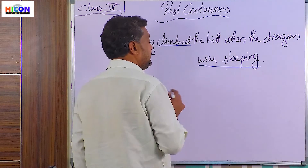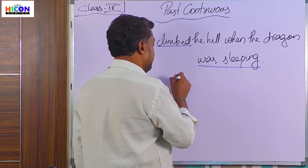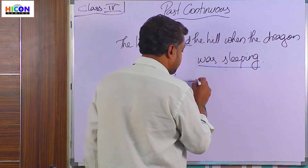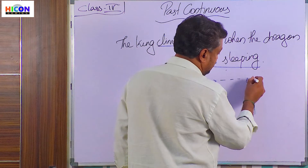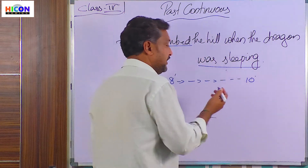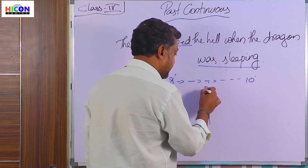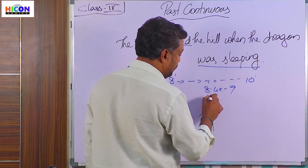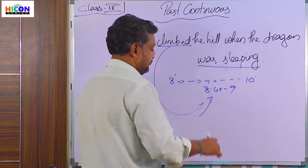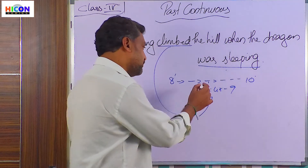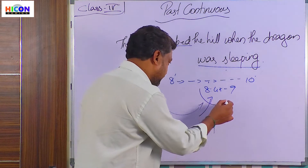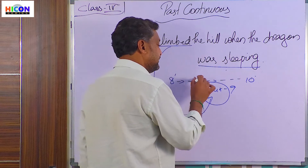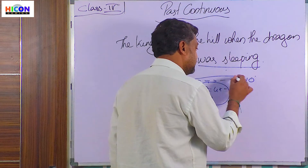This is an activity that, for example, at 8 o'clock the dragon started to sleep, and it was continuing at 10 o'clock. At 8:45 or 9 o'clock the king had climbed — so at that point of time, this activity was continuing.